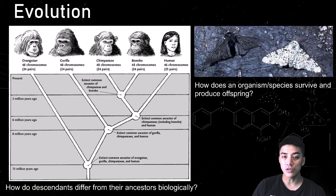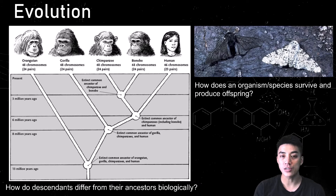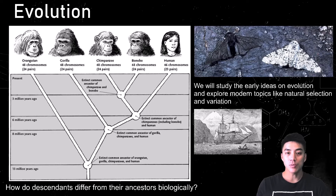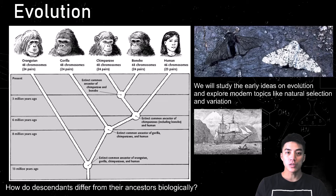Today we'll learn as much as we can about evolution and answer questions like how does an organism or species adapt to its environment so that it has a better chance of survival to produce more offspring. We'll study the early ideas on evolution and explore more modern topics like natural selection and variation. After watching this video, it'll clear up some misconceptions that you might share with the general public on evolution.